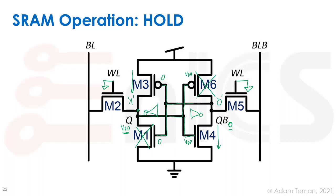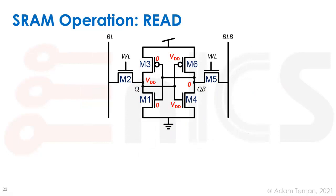M2 and M5 are shut off due to the word lines being at ground. The bit line and bit line bar are floating and cut off from the internals of the SRAM cell. Since we pre-charge during read to VDD, the bit lines are often assumed to be at VDD. That's the hold operation.